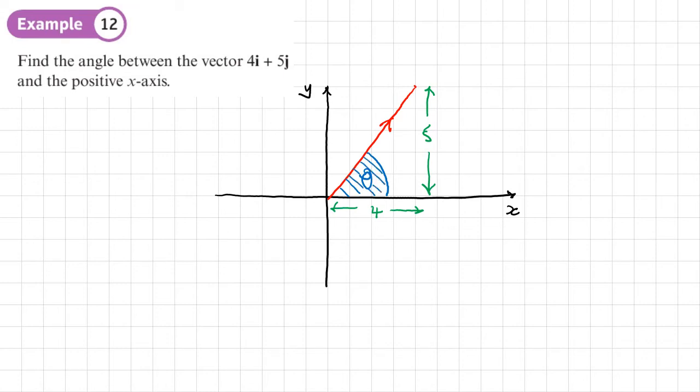So let's try and find that angle there. So this is going to be simple trigonometry. Theta is going to equal to the tan inverse, because it's opposite and adjacent. The tan inverse of the opposite over the adjacent, so the tan inverse of 5 over 4. So let's see what that gives us. Theta equals 51.3401, it goes on. We'll give our answer either to one decimal place for an angle or three significant figures. So 51.3 degrees rounded to three significant figures.